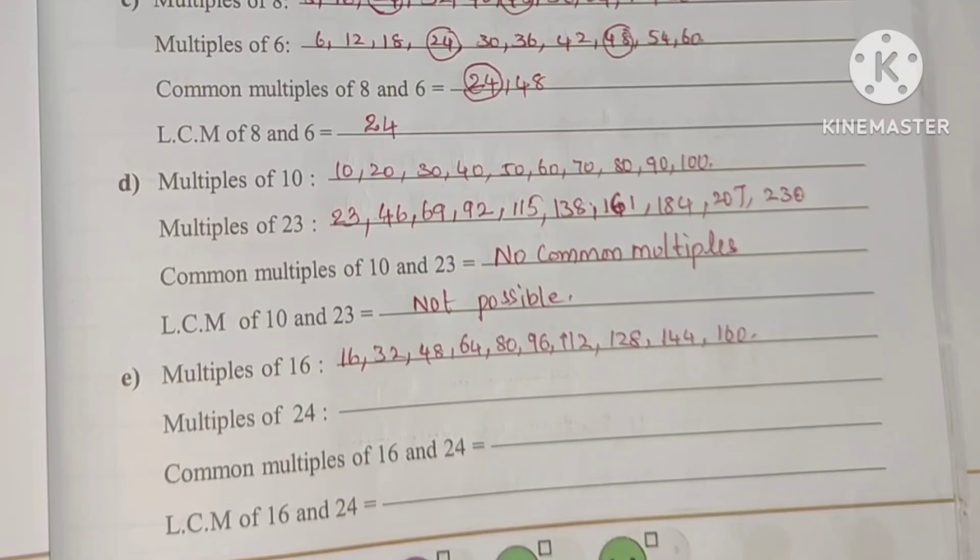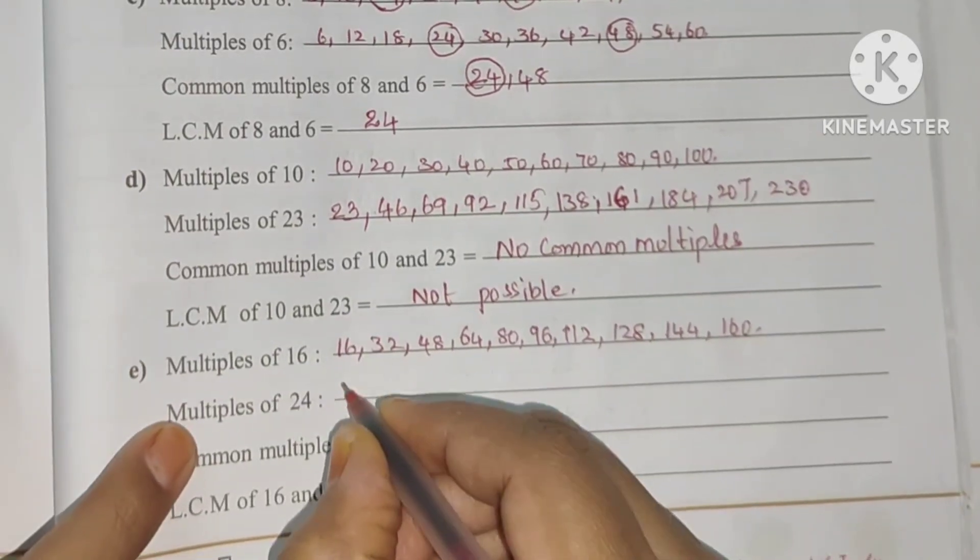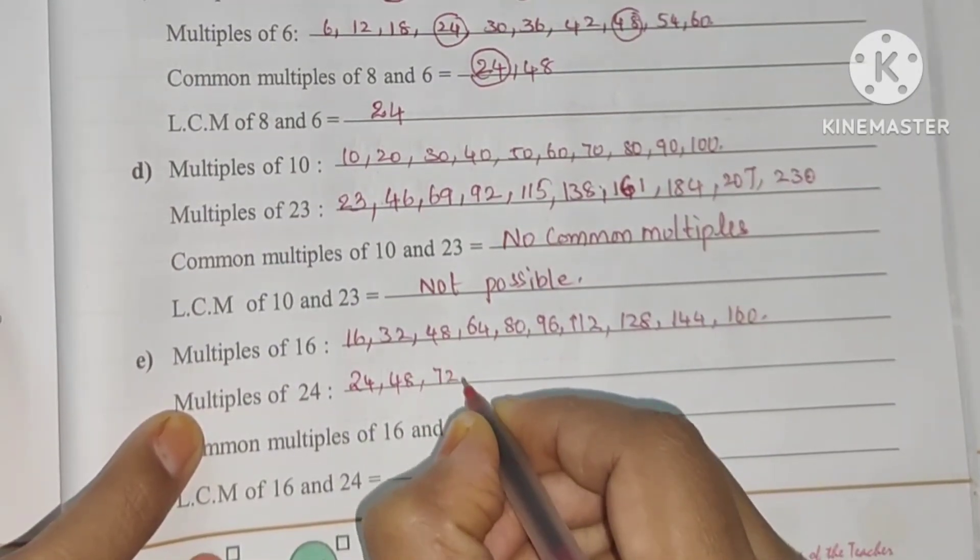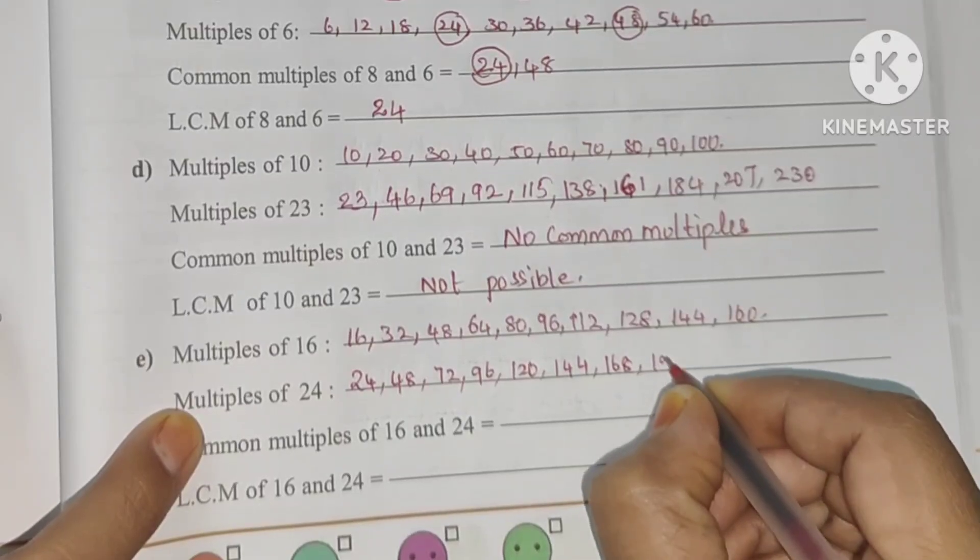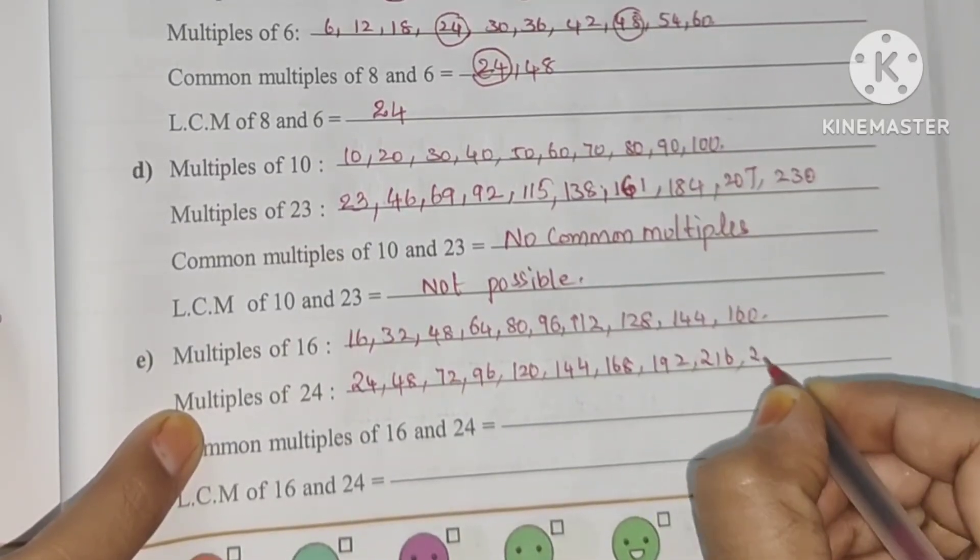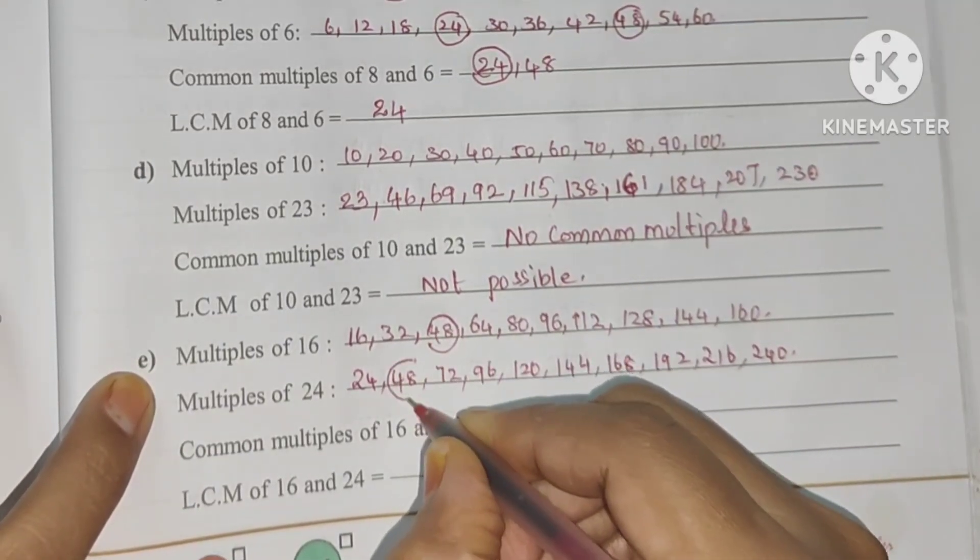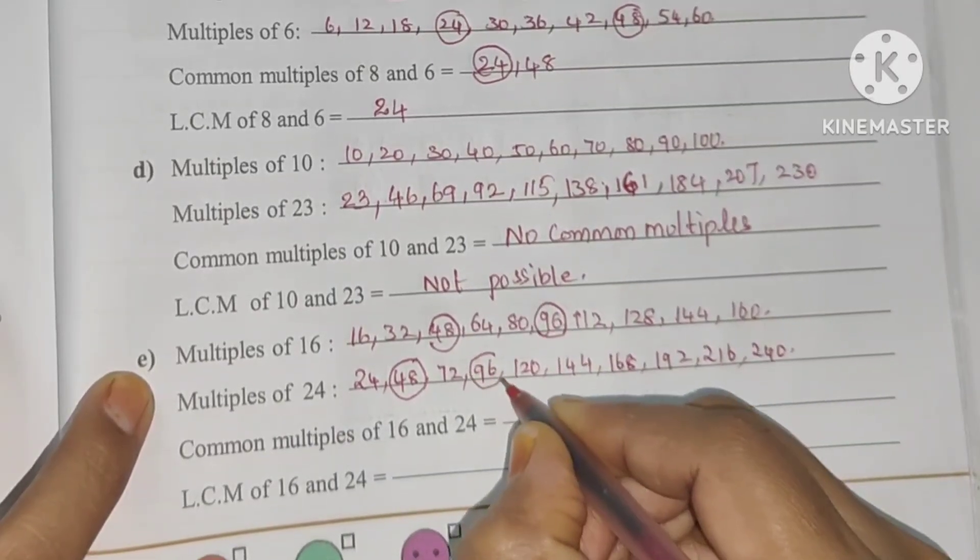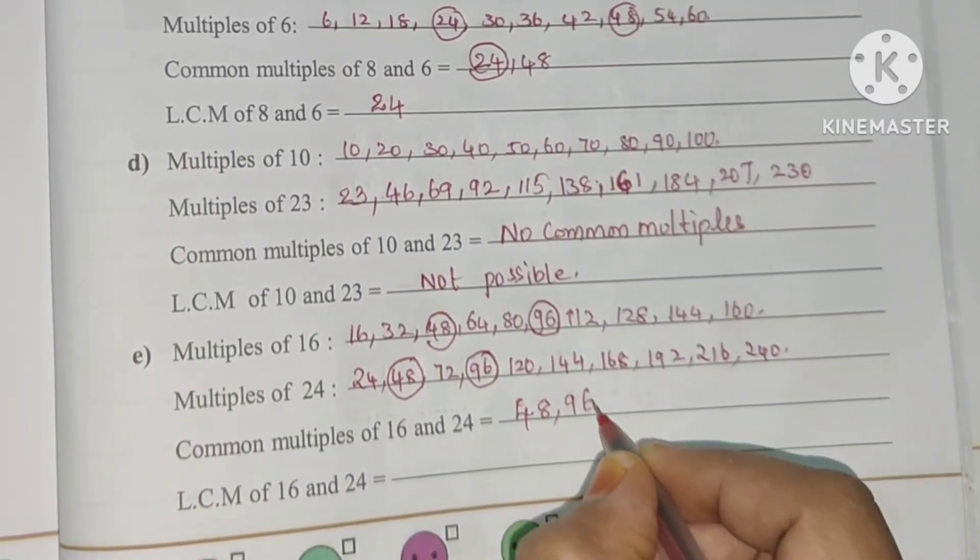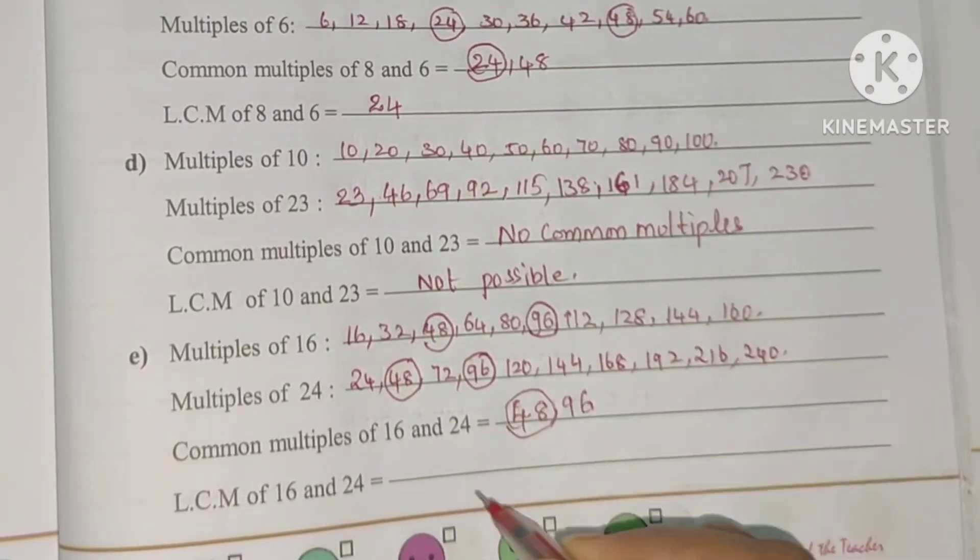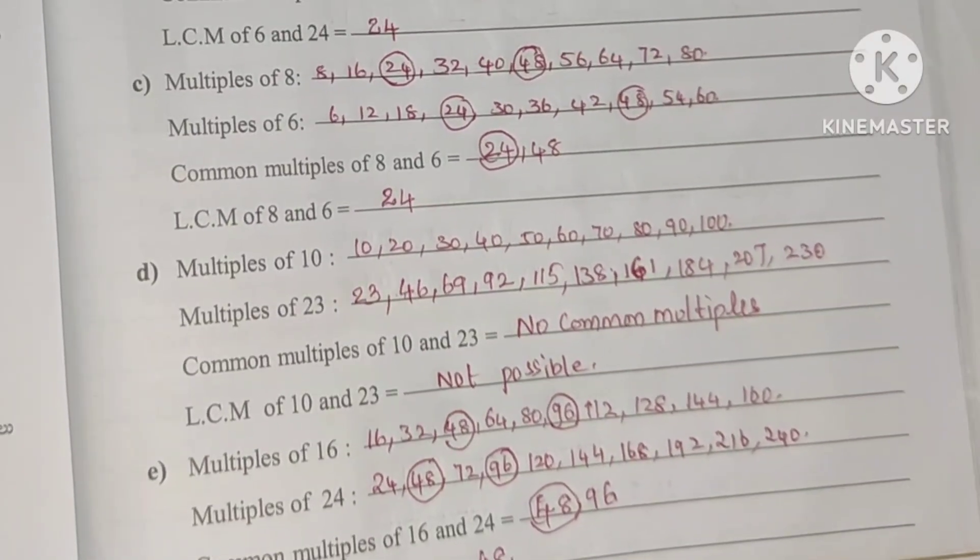Next, 24 table. I will write: 24, 48, 72, 96, 120, 144, 168, 192, 216, 240. So common multiples are 48 and 96. The least is 48, so LCM of 16 and 24 is 48.